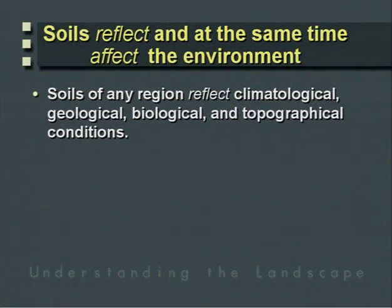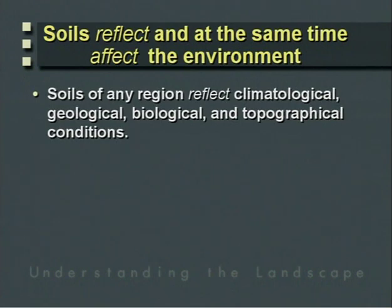Based on years of research in pedology and soil science, there are two fundamental things we know about soils. Soils first reflect environmental conditions and they also affect environmental conditions. This is called the duality of soil science. The soil reflects the environmental conditions under which it evolved, including the climatological, geological, biological, and topographical conditions that generally define the state of the soil system.